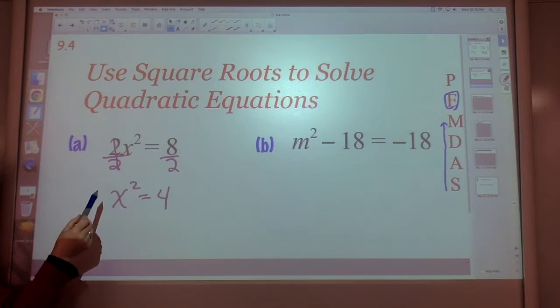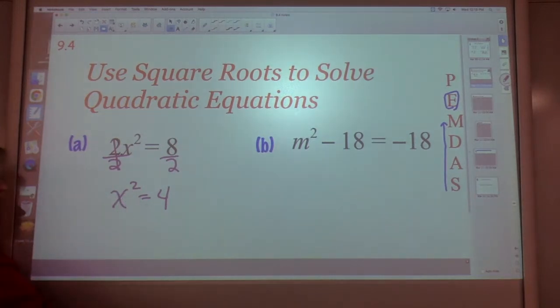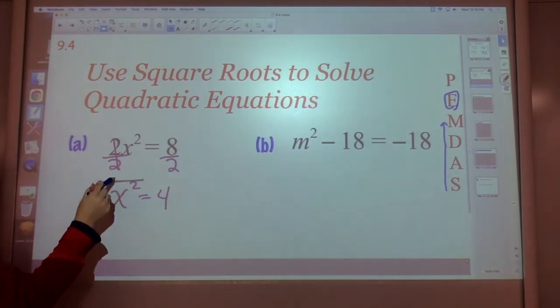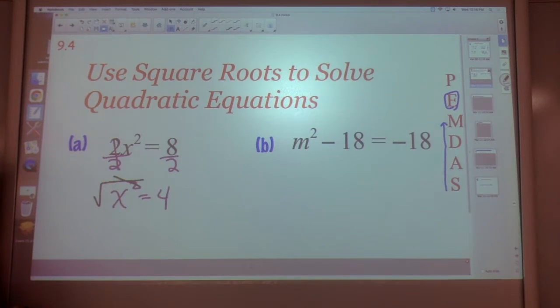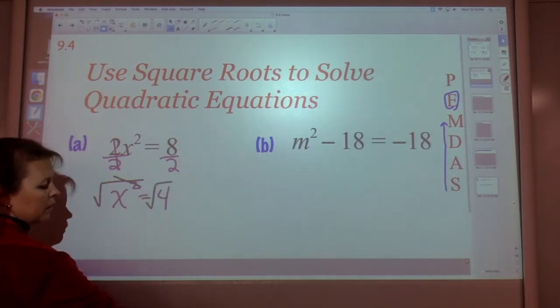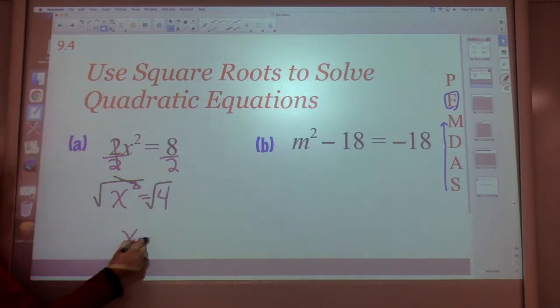Well remember, if we flip back to the other page, the opposite of adding and subtracting. Multiply, multiply, divide. If it's divide, you multiply. If it's subtract, you add. But what do we do with a square? We take a square root. A square and a square root cancel each other out. You might remember that from our radicals unit. But again, whatever you do to one side of the equation, you must do to the other side of the equation. So right now you're thinking, all right, that's easy enough. The square root of 4 is 2.